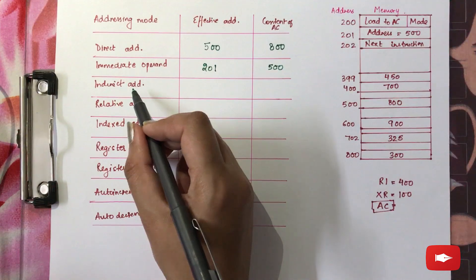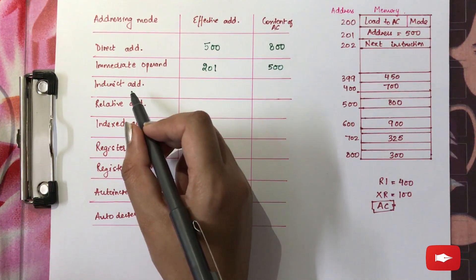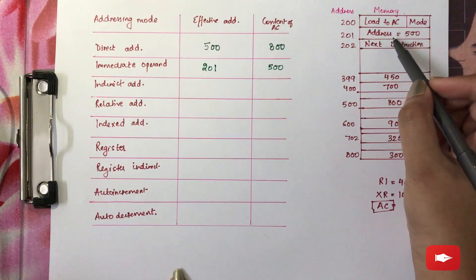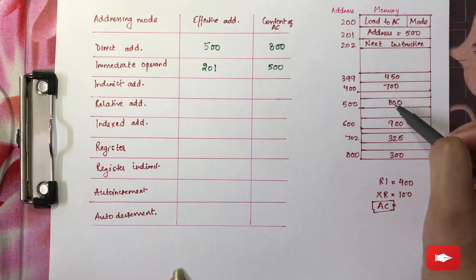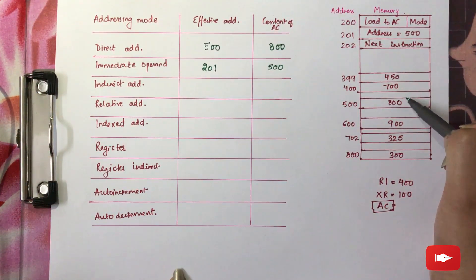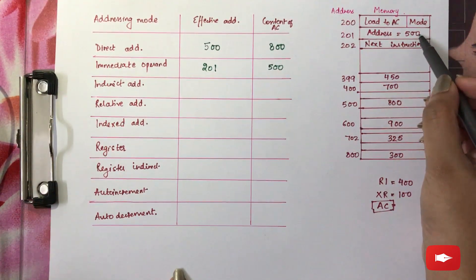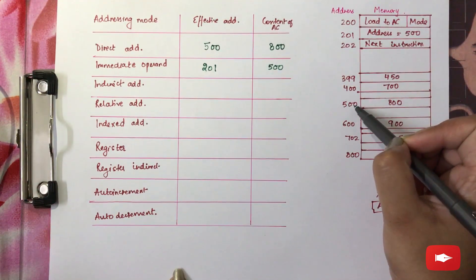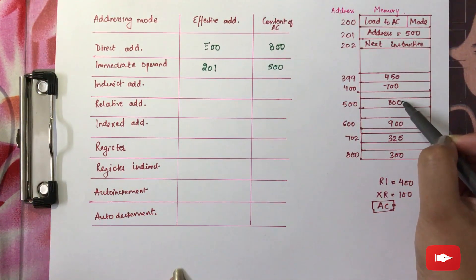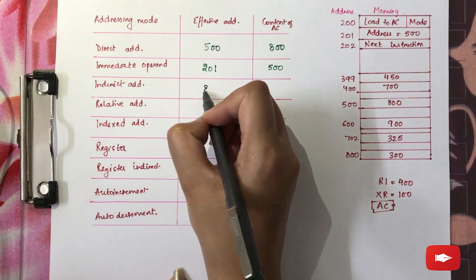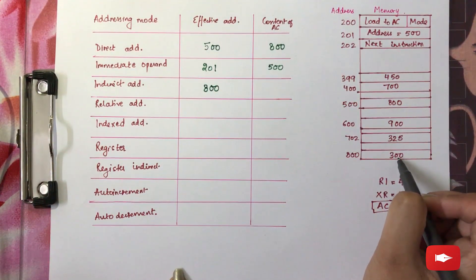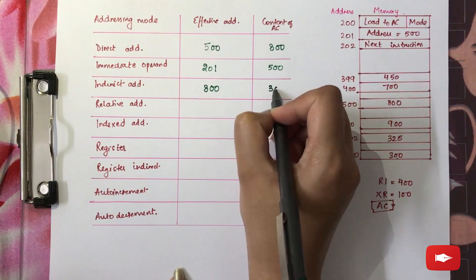Next is indirect addressing mode. In indirect addressing mode, the address specified in the address part of the instruction does not give you the operand but another address, and then that particular address gives you the operand. Therefore, 500 is your first address and the value at 500 is your next address, which will act as the effective address. So 800 is the effective address in this case, and the value at 800, which is 300, will be your operand value.